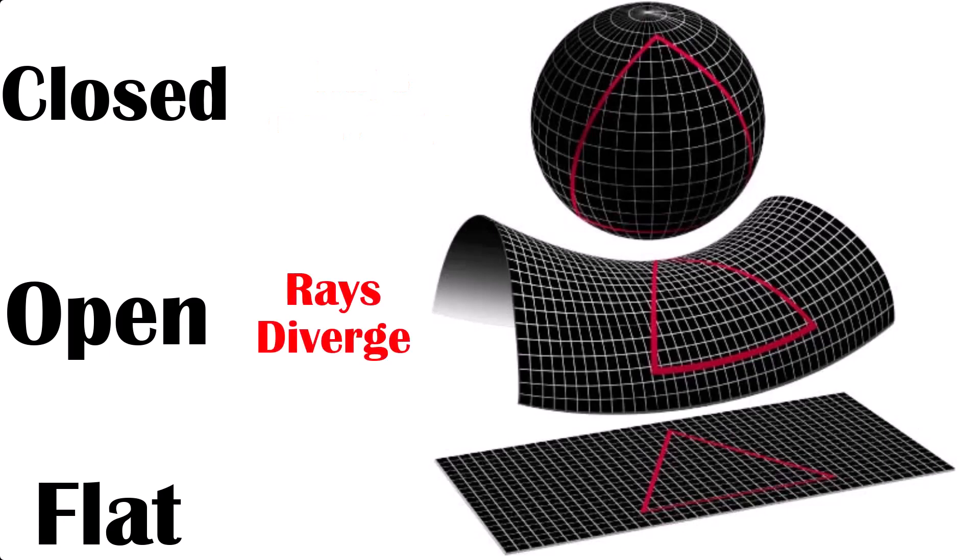Finally, in an open or hyperbolic universe, the lines would diverge and get further apart. Hyperbolas are harder to visualise, but that's what would happen to the rays.